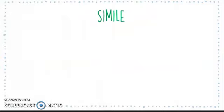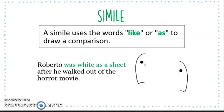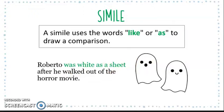A simile is a figure of speech that uses the words 'like' or 'as' to draw a comparison between two different things in an interesting way. For example: 'Roberto was as white as a sheet after he walked out of the horror movie.' In this example, we compare Roberto to the sheet using the word 'as,' so this is an example of a simile.